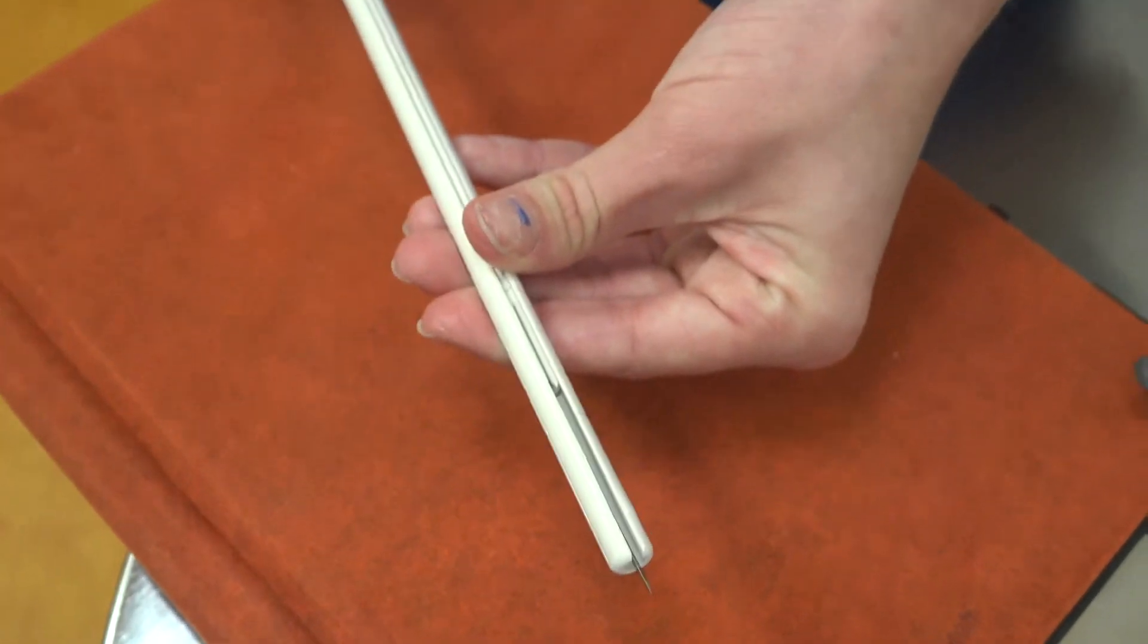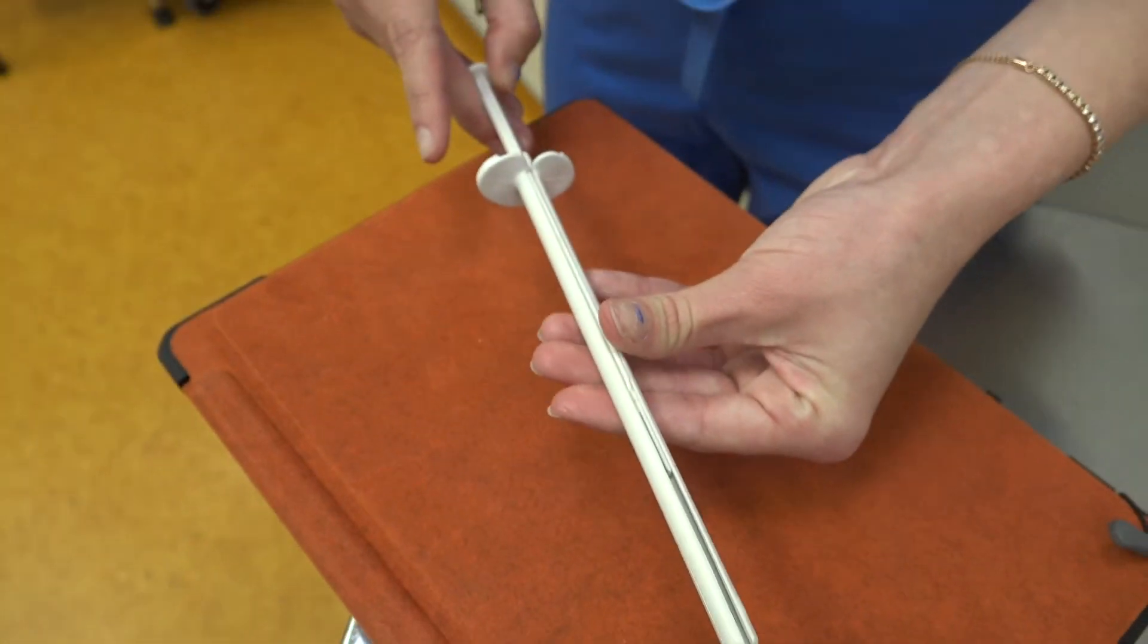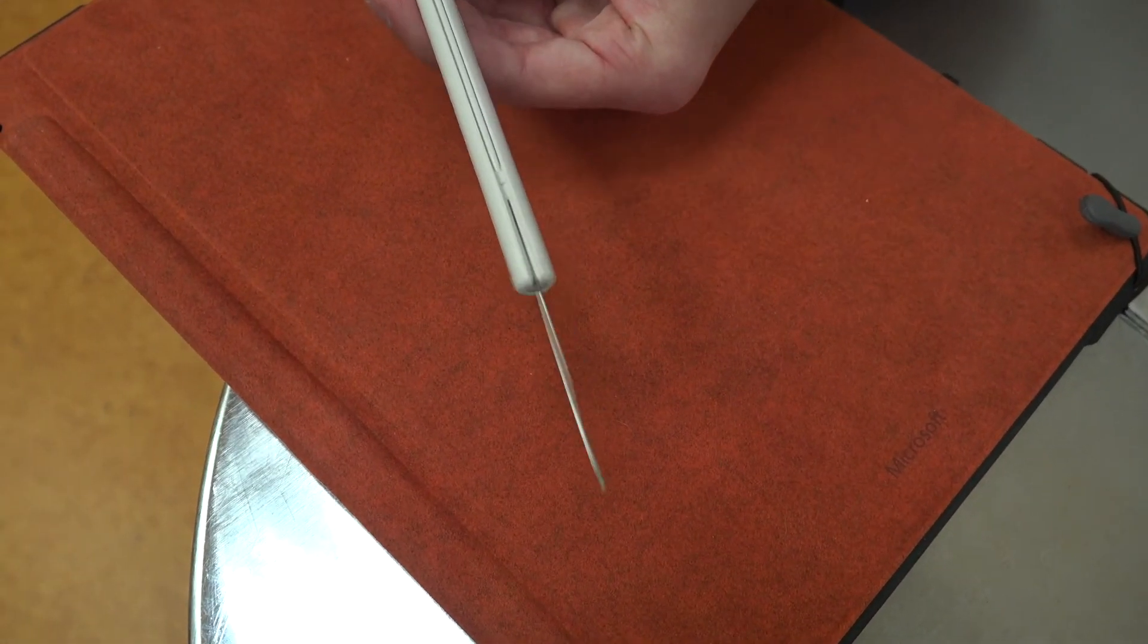When it's pulled all the way back, the needle will not fall out. It stays snug in there. When you're ready, you just push the pin in the back and it comes out.